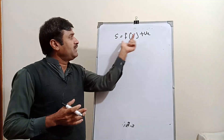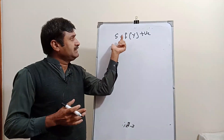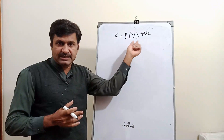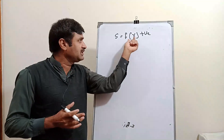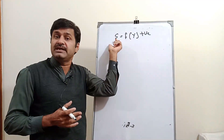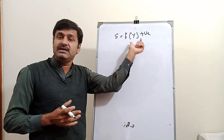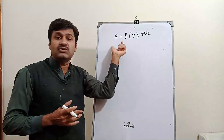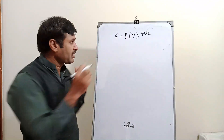What is the saving function? Saving is a function of income and there is a positive relationship. If income increases, then saving also increases, and if income decreases, then saving also decreases.